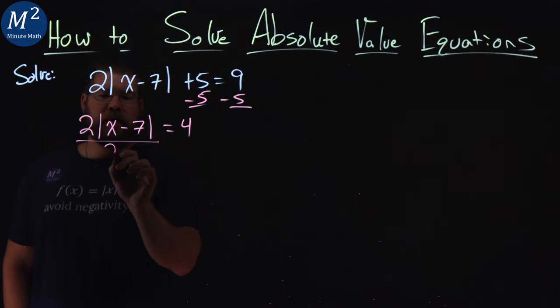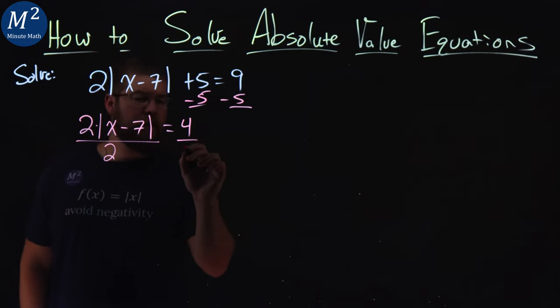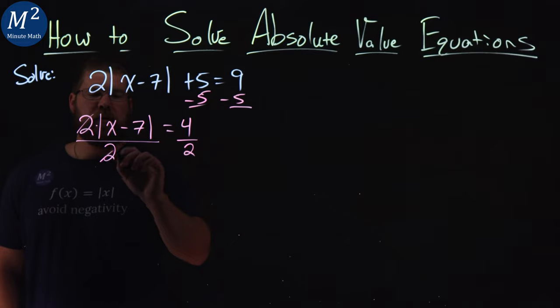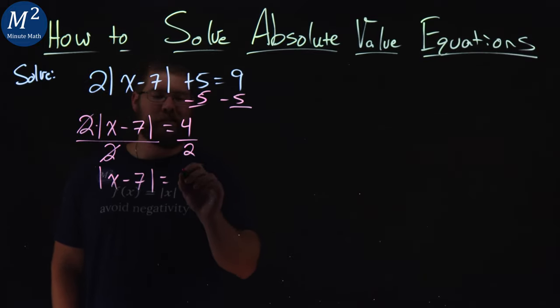From there, I want to divide both sides by 2, because remember, outside the absolute value, that's really multiplication there. Divide by 2. The 2's cancel here. Absolute value of x minus 7 is equal to 4 over 2, which is 2.